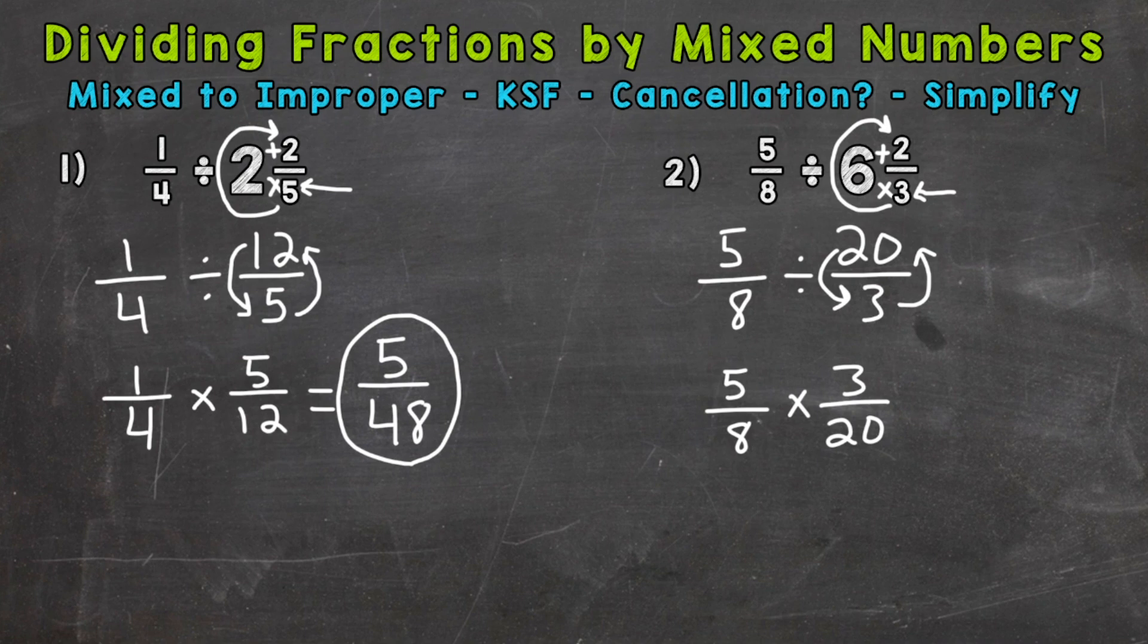But you can look for cancellation if you want to simplify the problem before multiplying straight across. In the case of number two, we can use cross-cancellation because we have some common factors between our numerators and denominators other than one. Our five and twenty have a greatest common factor of five. Five divided by five is one. Twenty divided by five is four.